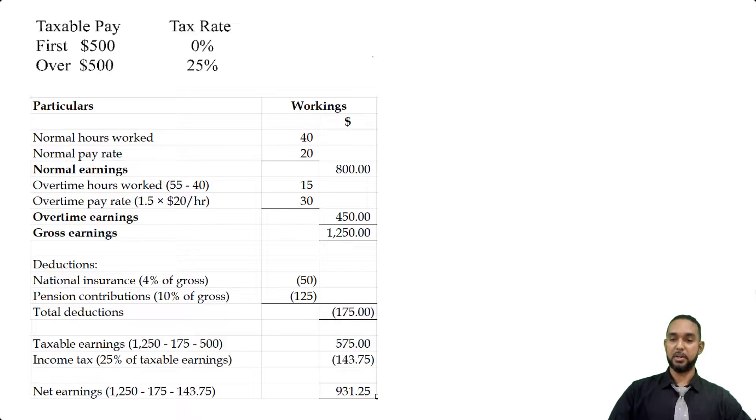The net earnings — the amount David gets to take home — is $1,250 minus deductions of $175 minus income tax of $143.75, giving us $931.25. And that's it for this question. If you have any questions about it, please feel free to leave them in the comment section below. Don't forget to subscribe and check out my website for useful POA handouts. Thank you so much for watching — take care of yourselves and I'll see you next time. Bye.